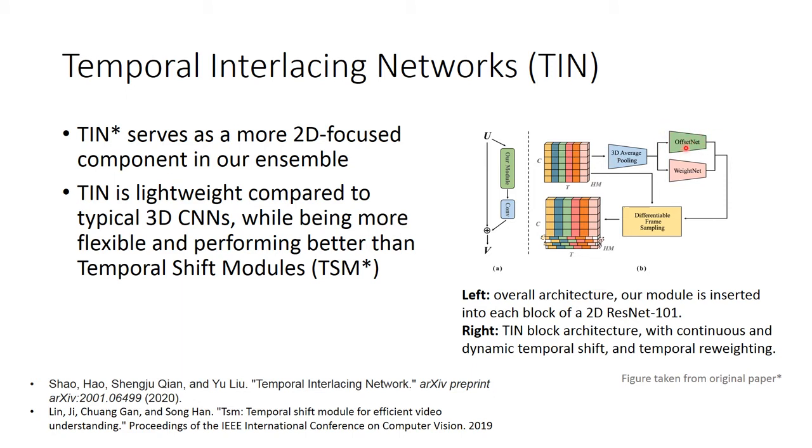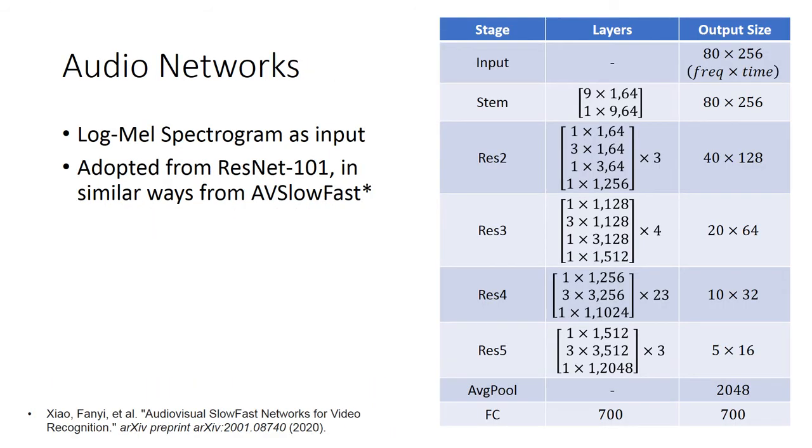So our TIN here generally makes the model more flexible with negligible additional computation. So generally, it achieves better performance than TSM at roughly the same computation cost. More specifically, TIN makes the temporal shift continuous and learnable. This is the overall framework of our TIN modules. As you can see, TIN is actually more two-dimensional focused, which is three-fourths of its channel unshifted, and working in the same way as a frame level 2D network. While at the same time, TIN is also better at modeling long-term dependency, as the learnable offset net actually allows the temporal interactions to stretch beyond the adjacent frames.